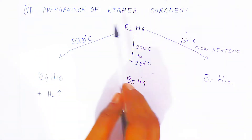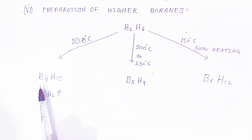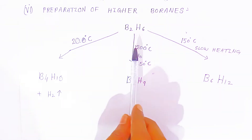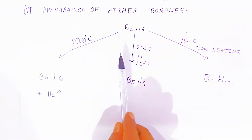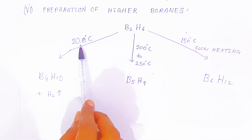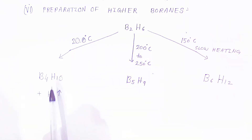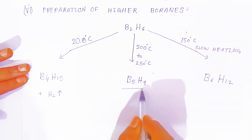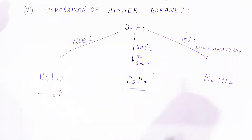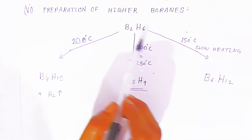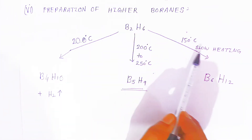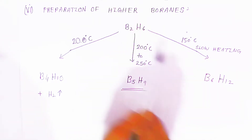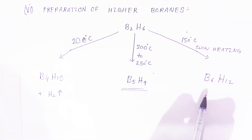We can also prepare higher boranes such as tetraborane, pentaborane, and hexaborane, where temperature plays a very important role. If you heat diborane at 200°C you get tetraborane with elimination of hydrogen gas. Heating diborane at 200 to 250°C gives pentaborane. To get hexaborane, you heat at 150°C with slow, gradual heating, and the compound converts to B₆H₁₂, which is called hexaborane.